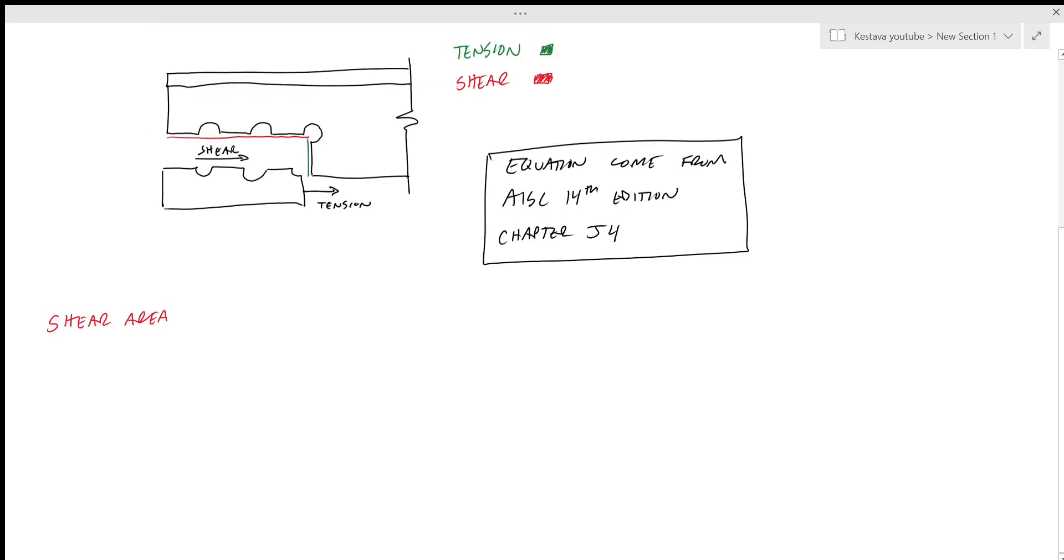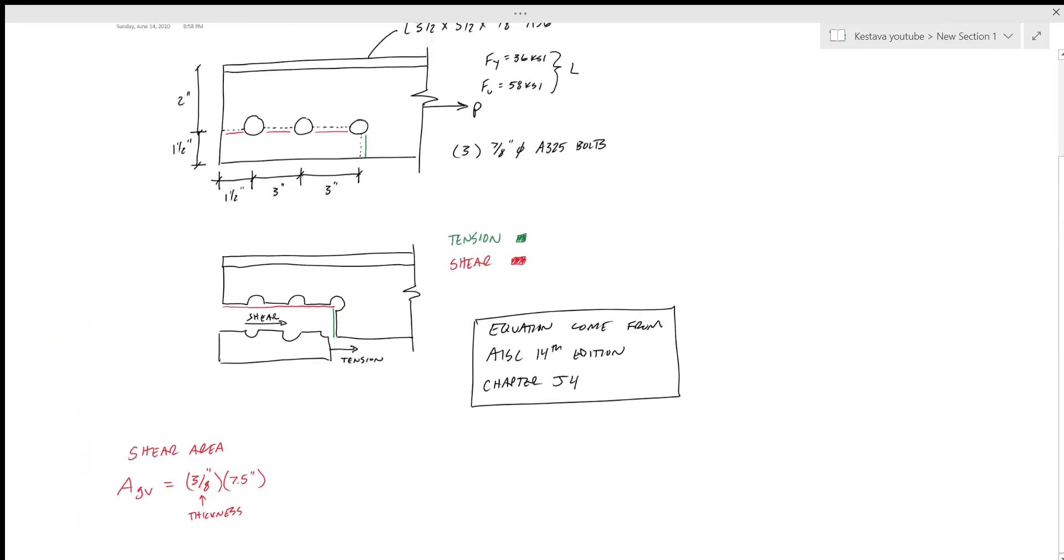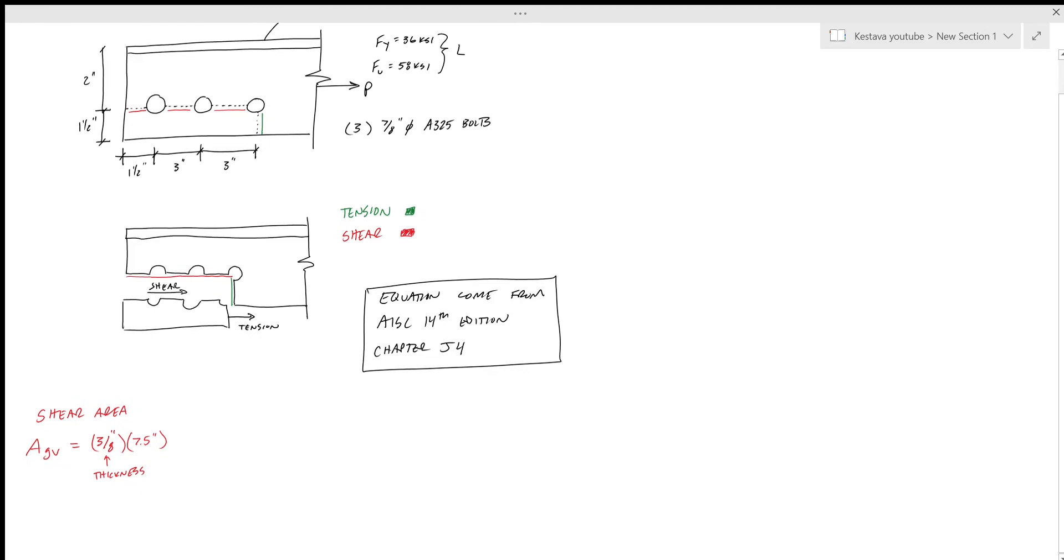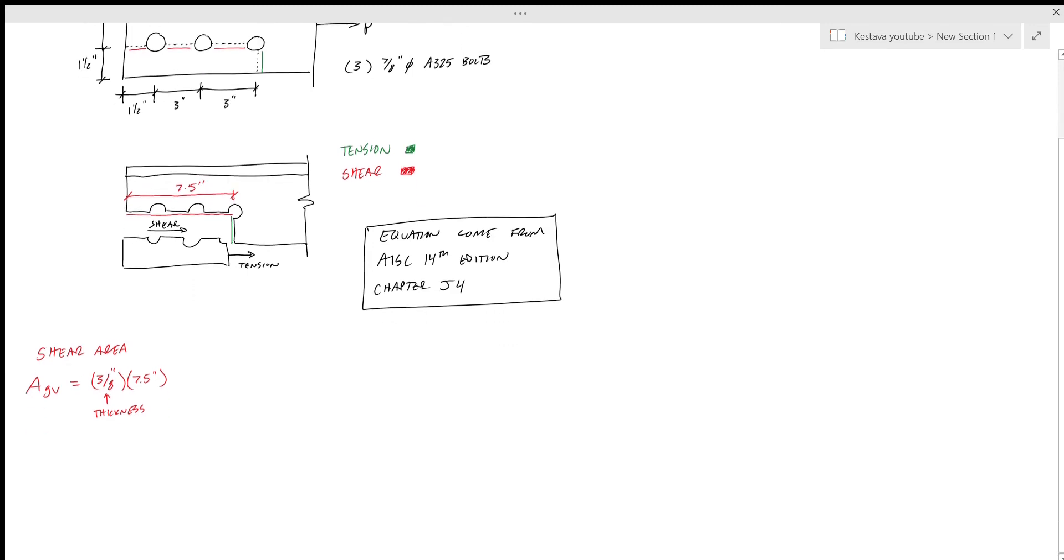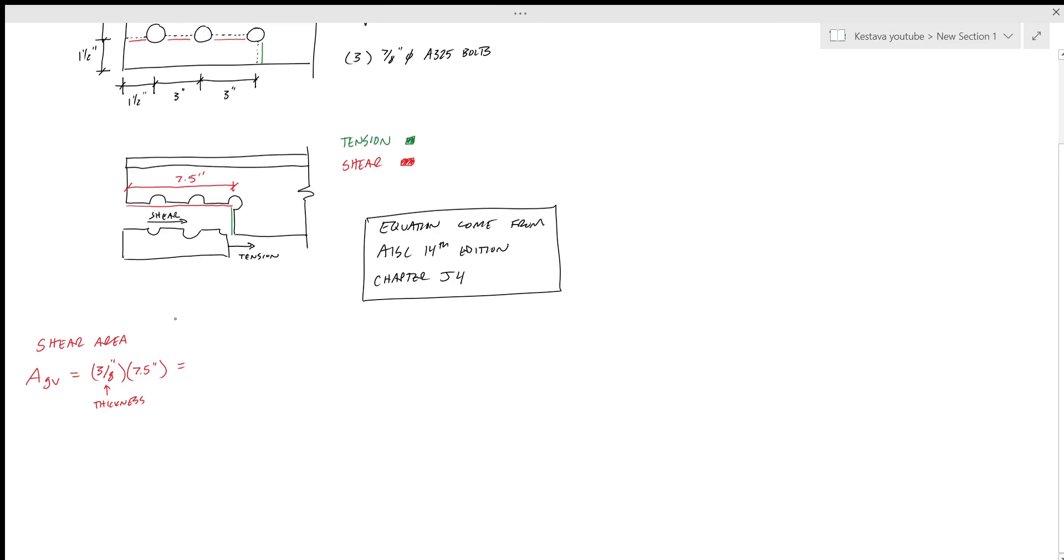First thing we want to do is we want to know our shear area. We'll denote that by AGV because that's our gross shear area, which equals 3/8 inch, that's the thickness of our L section, multiplied by 7.5 inches, the total length there. That gives you the surface area that's being sheared off. That's 2.813 inches squared.